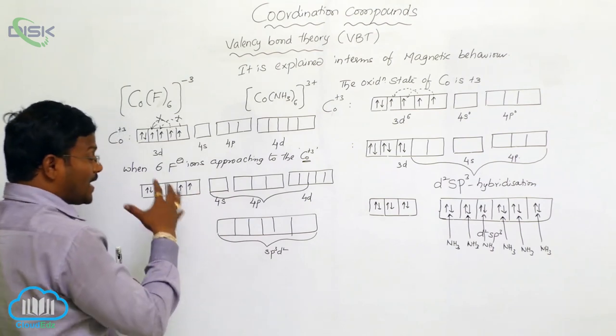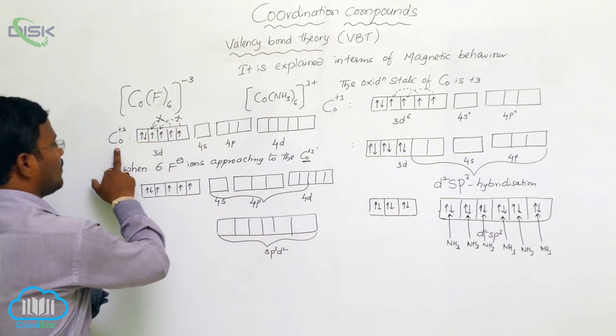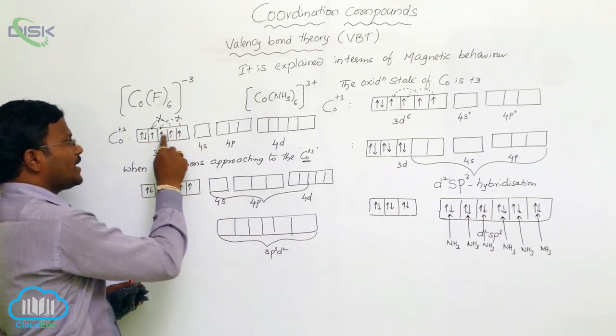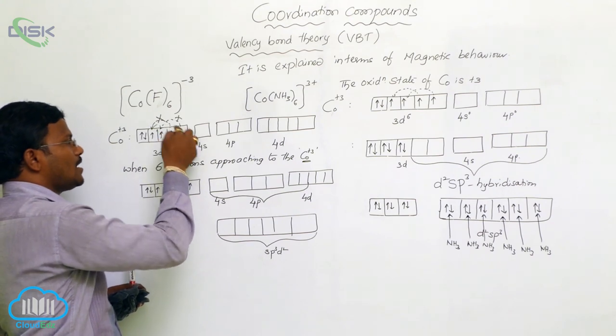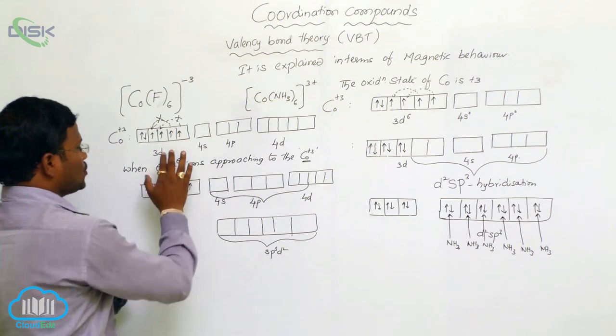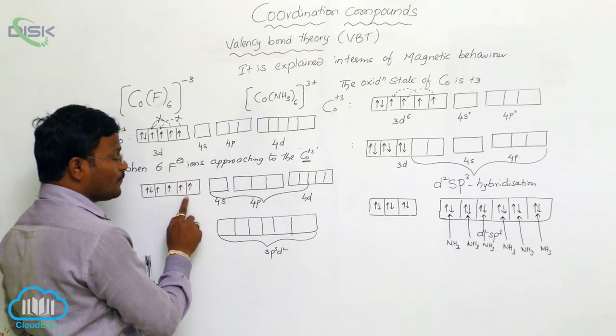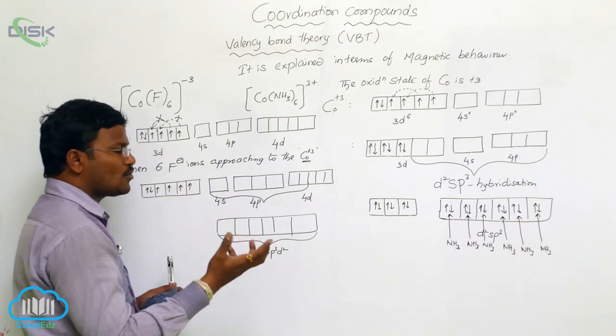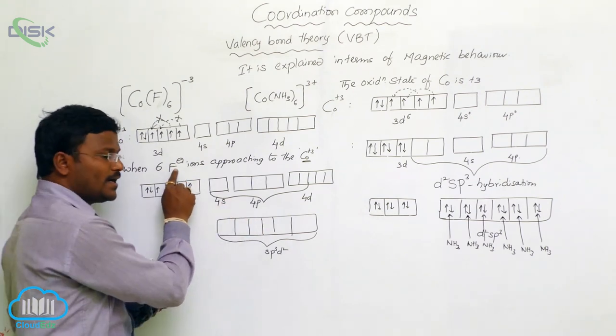But when weak field ligands are approaching near to the metal complex or metal ion, there is no rearrangement of electrons of 3d series into their inner orbital. Hence, there is no availability of 3d orbital, vacant 3d orbitals to make coordination covalent bond with fluoride ions.